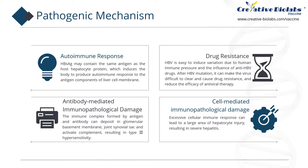Drug resistance resulting from mutation of the virus: HBV is prone to variation due to human immune pressure and the influence of anti-HBV drugs during infection. After HBV mutation, the virus becomes difficult to clear, causing drug resistance and reducing the efficacy of antiviral therapy. Mutation of the S gene can lead to HBsAg-negative HBV variant infection and diagnostic escape. Mutation in the pre-C/C region blocks HBeAg synthesis, making HBeAg negative in patients, but viral replication is not affected. Variation in the P-region gene can directly affect the efficacy of antiviral therapy.